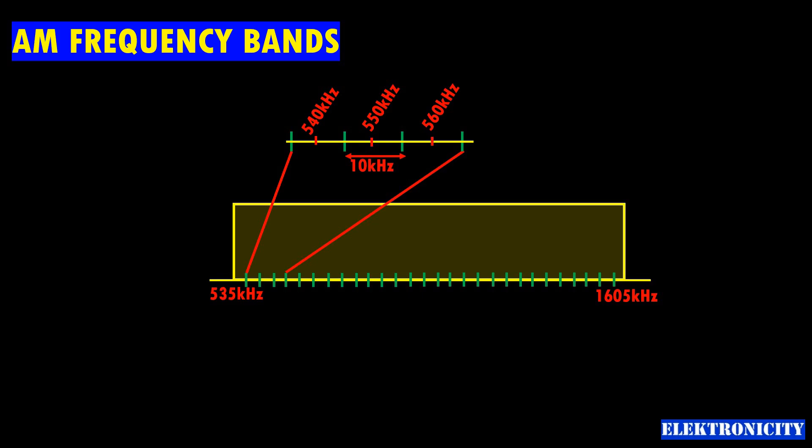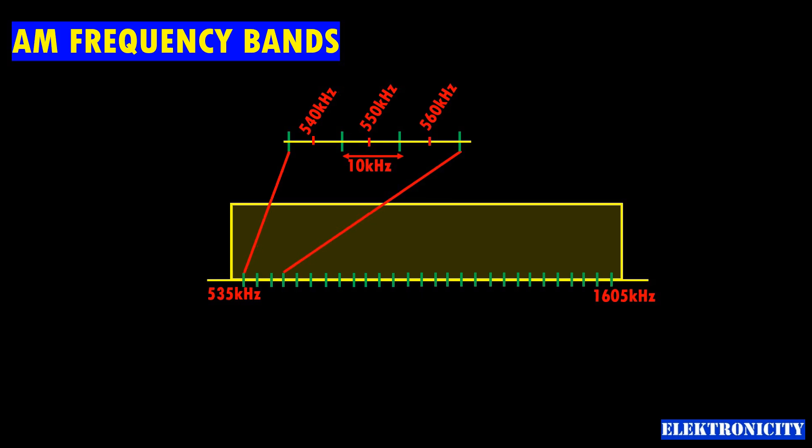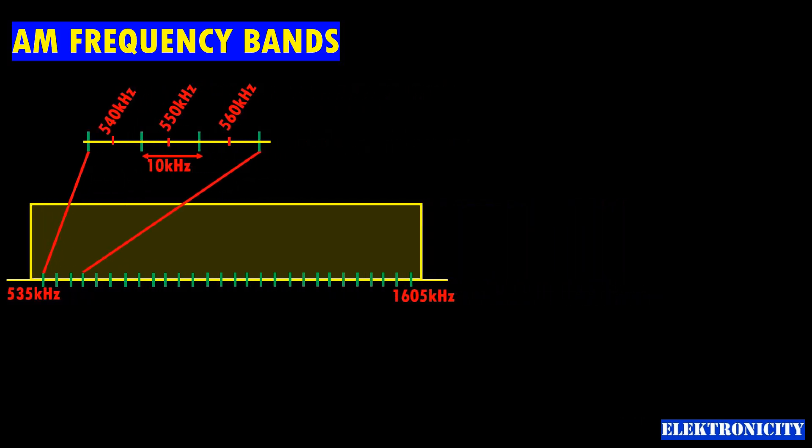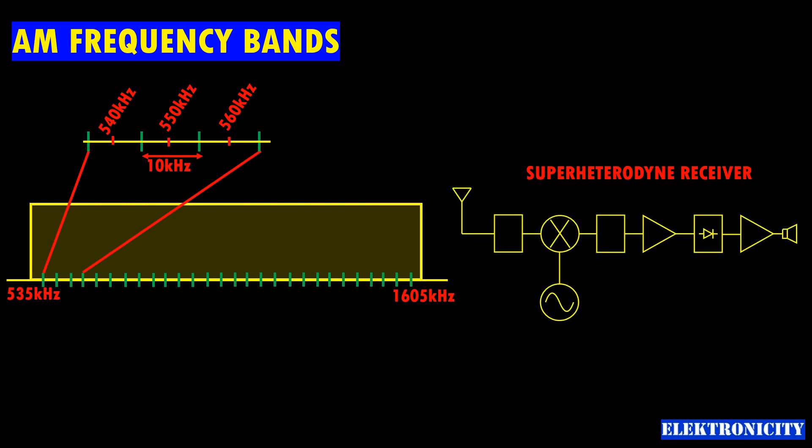This meant that changing to different channels required tuning of multiple stages, making it a costly and a cumbersome process. In a superheterodyne radio, receiving a different frequency channel is achieved by changing the LO frequency.